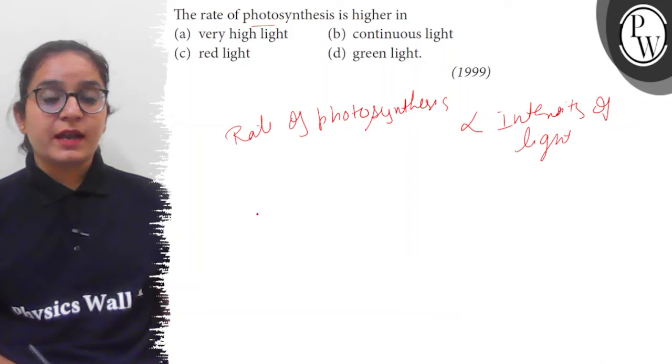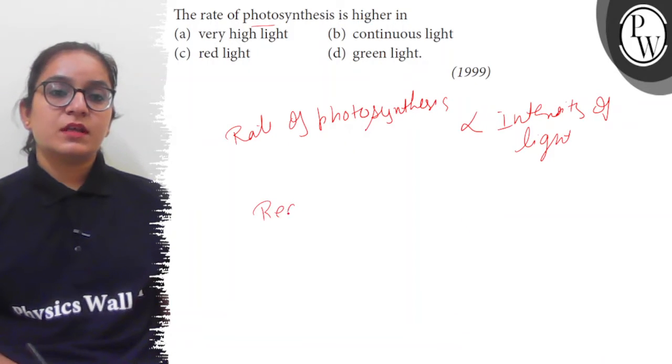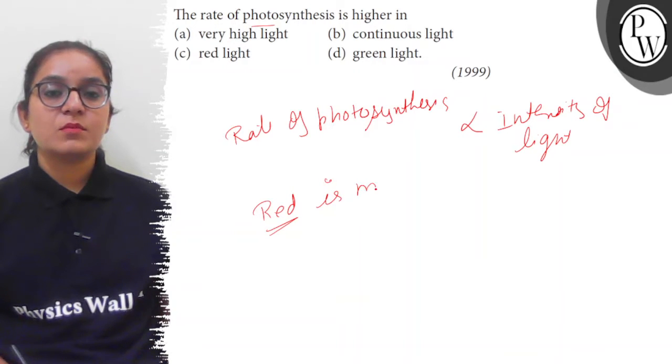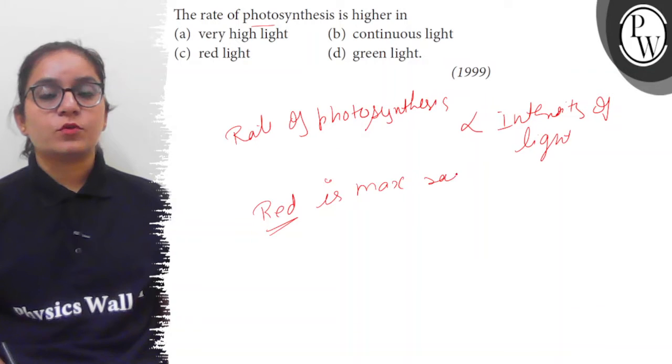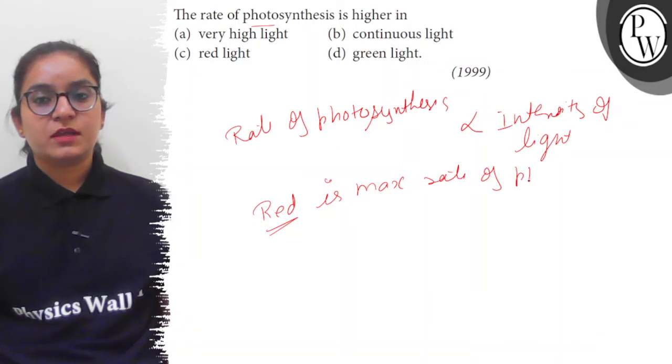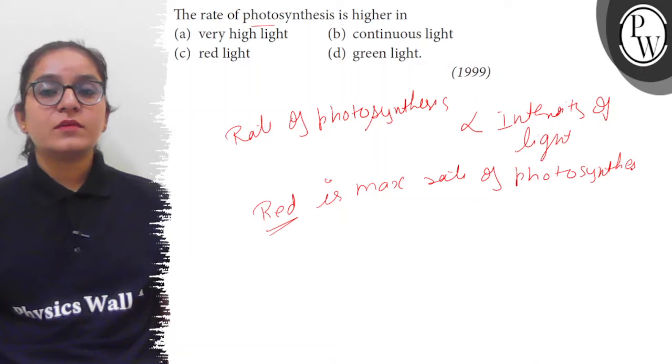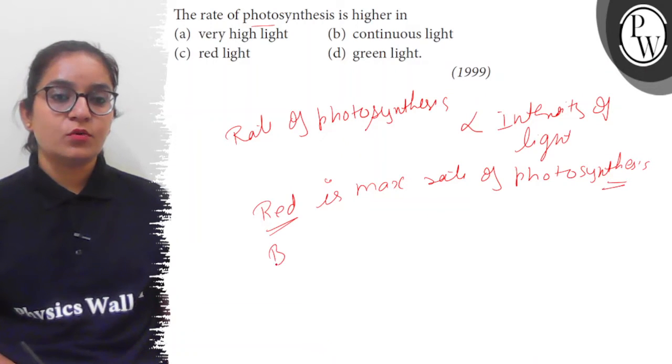If red wavelength is used, the rate of photosynthesis is maximum. Red gives the maximum rate of photosynthesis in monochromatic light, followed by blue.